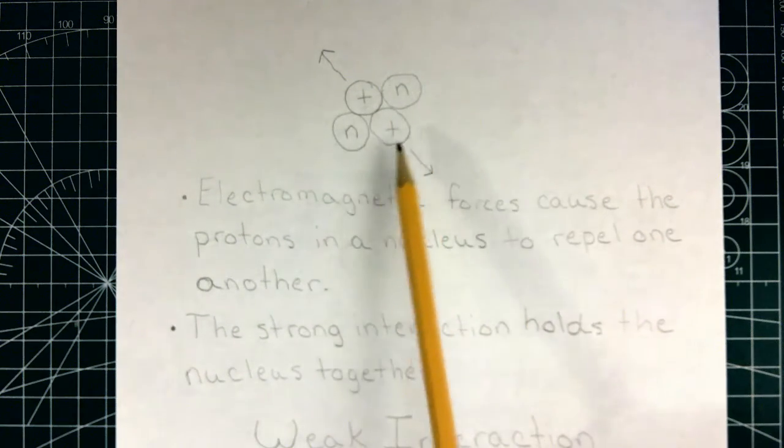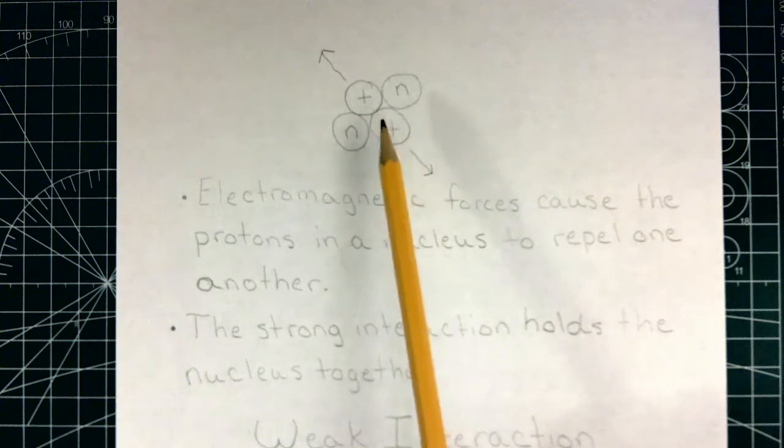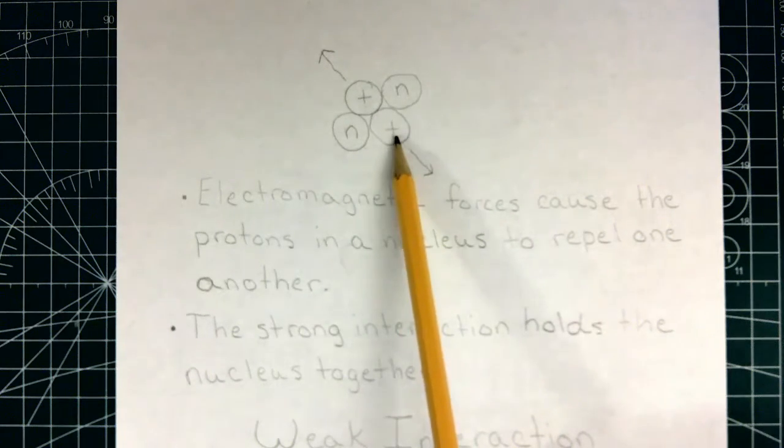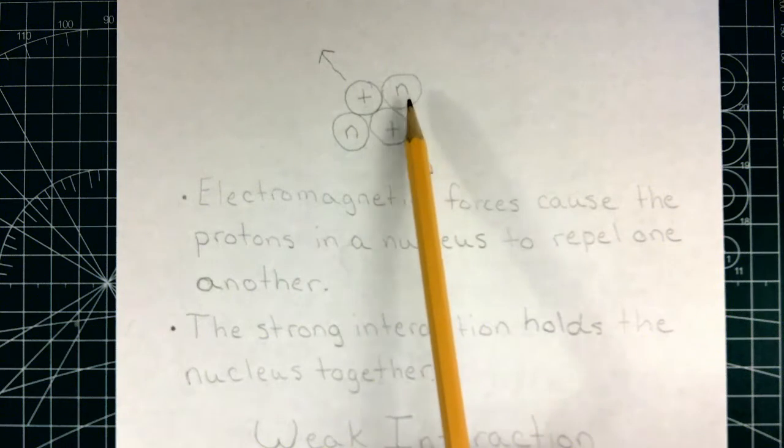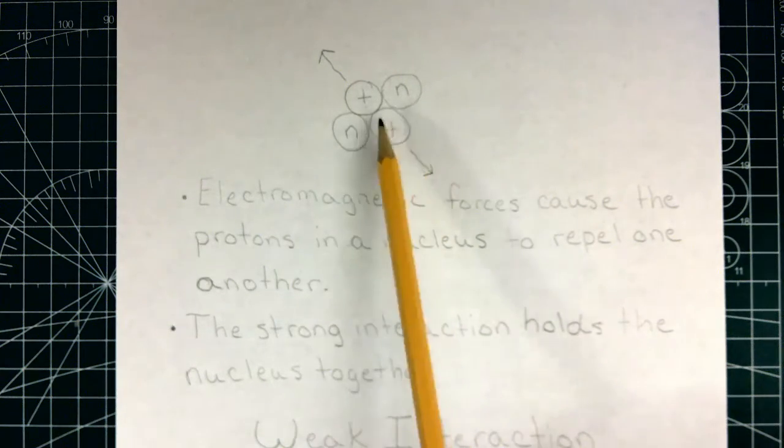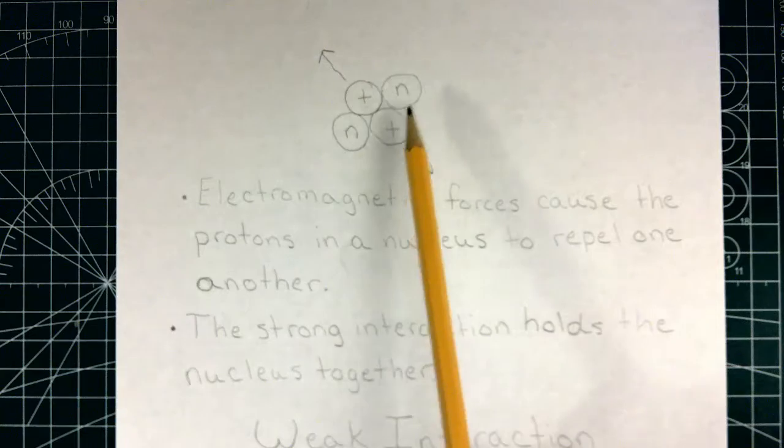It's also interesting to note that, while it's outside my expertise to tell you much more, the strong interaction is actually also holding together the protons and neutrons themselves. These are made out of even smaller, more fundamental particles that are held together by the strong interaction into protons and neutrons.